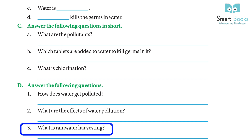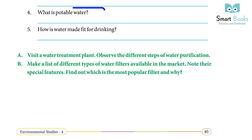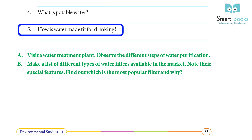3) What is rainwater harvesting? — Rainwater harvesting is the collection and storage of rainwater. 4) What is potable water? — Water that is fit for drinking is called potable water. 5) How is water made fit for drinking? — At the water treatment plant, water is first filtered to remove impurities, then treated with chemicals to kill germs. This purified water is pumped into a huge water tank, from where it reaches the taps through a network of pipelines. The height of the tank gives steady pressure to water passing through the pipes.